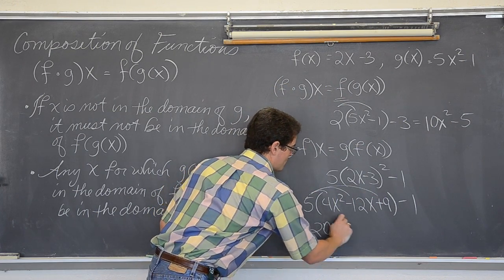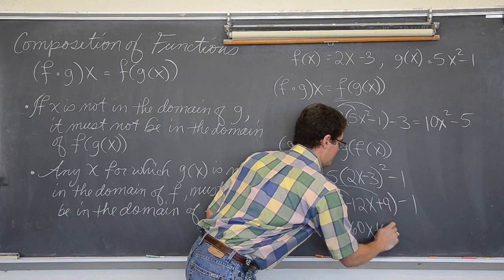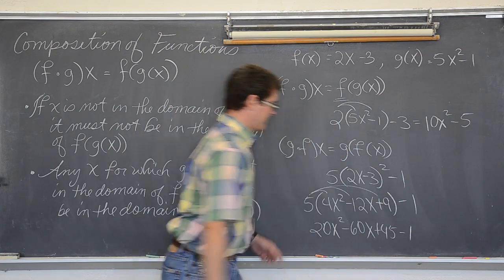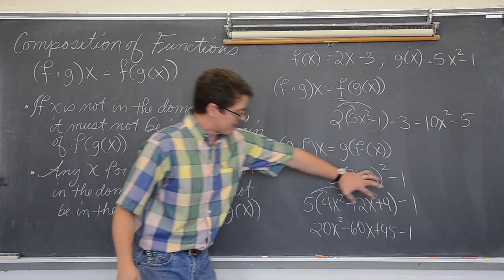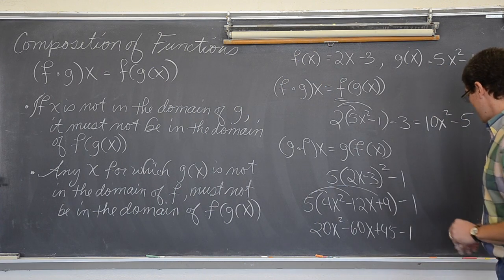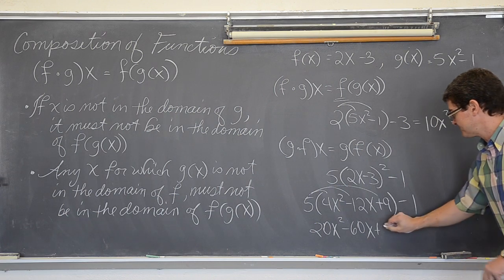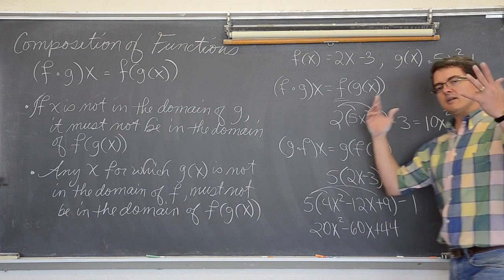And you get 20x squared minus 60x plus 45 minus 1. And then combined like terms, clearly that is going to be 44. So, 45 minus 1 is 44. And bam!